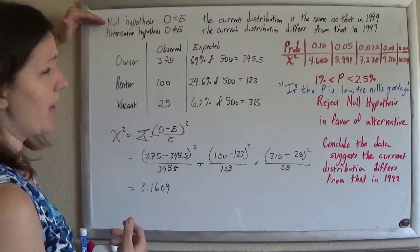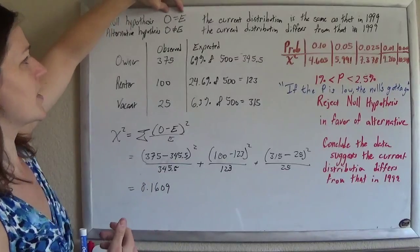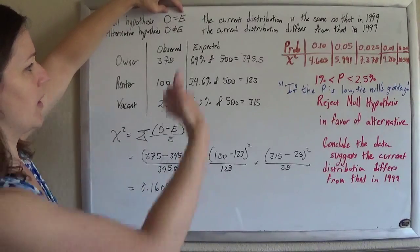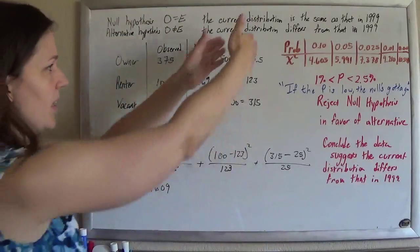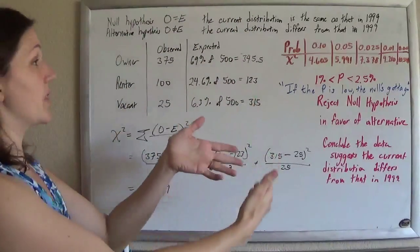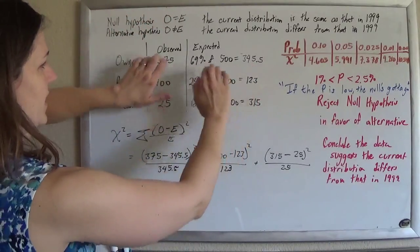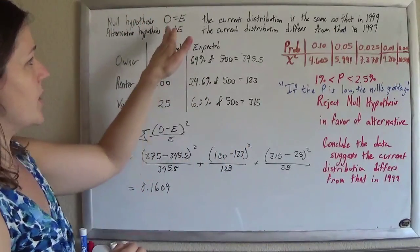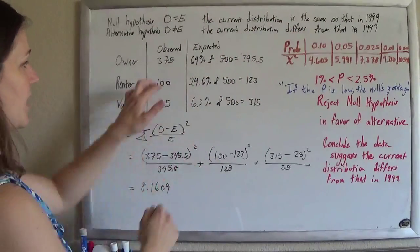You have your null hypothesis, and the null hypothesis is always that something equals something. And it's always the observed values equal the expected values. Even though we expect it to be different, the expected values are as if they were the same. So we base it all on that these equal those. And so that's our null hypothesis, that the current distribution is the same as 1999.